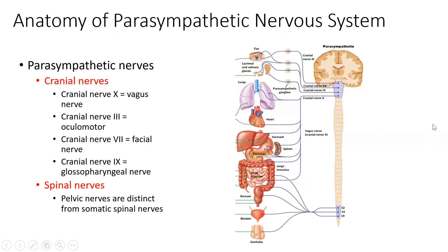The other difference is where these fibers originate. In the sympathetic, they originated from T1 to L2, the central segment of the spinal cord. In the parasympathetic system, fibers arise from the brainstem via cranial nerves 3, 7, 9, and 10, and then from the sacral spinal nerves S2, S3, and S4 — the pelvic nerves.